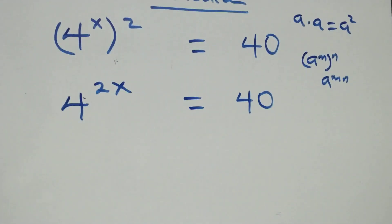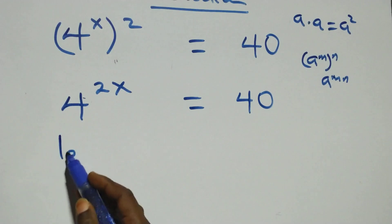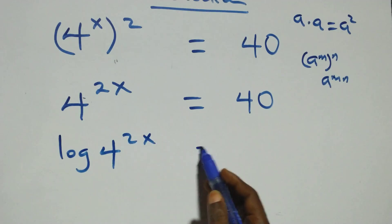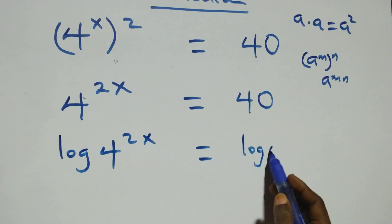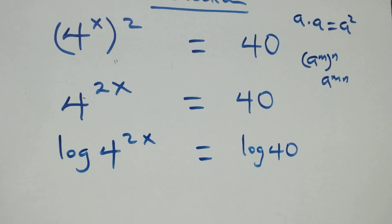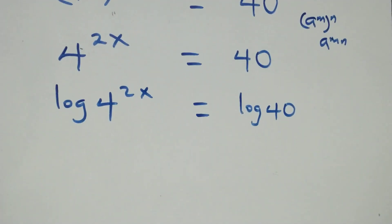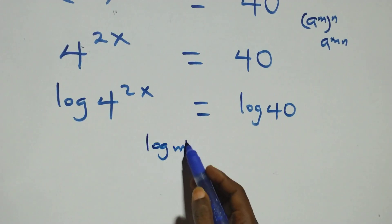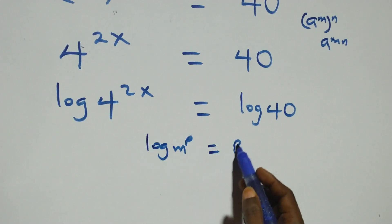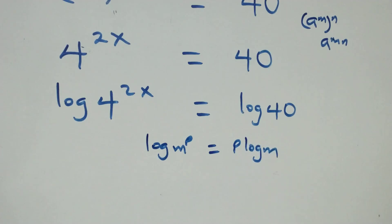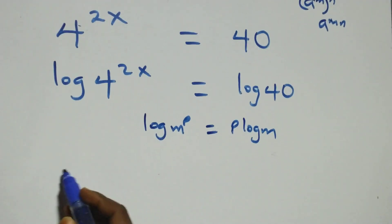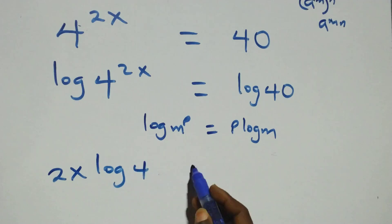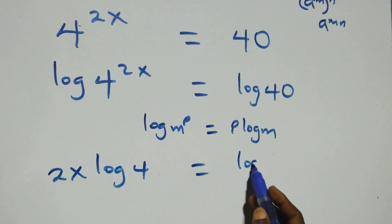Then here, take the log on both sides. We have log of 4 raised to power 2x equals log 40 on this side. Here we apply the power rule of logarithm: log m raised to power p is the same thing as p·log m. That is, this becomes 2x·log 4 equals log 40.